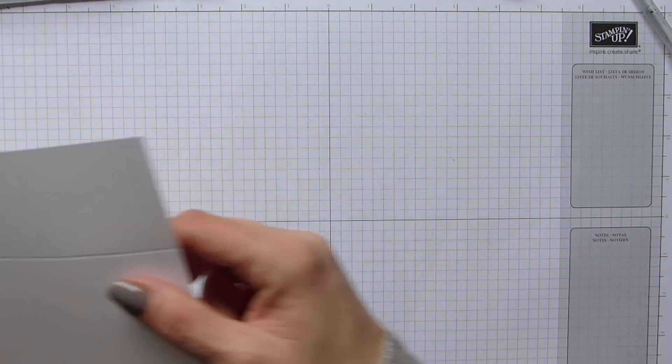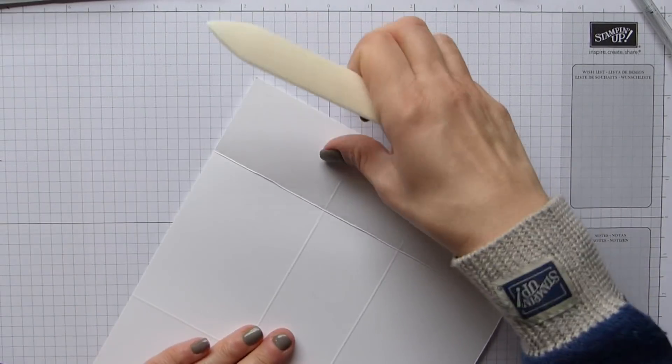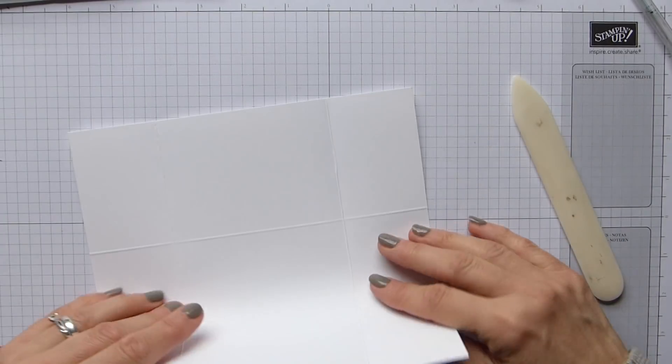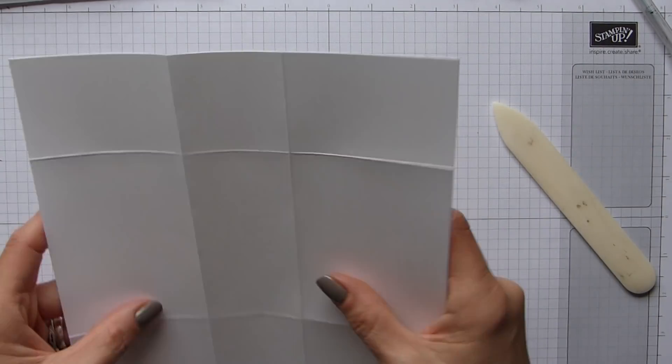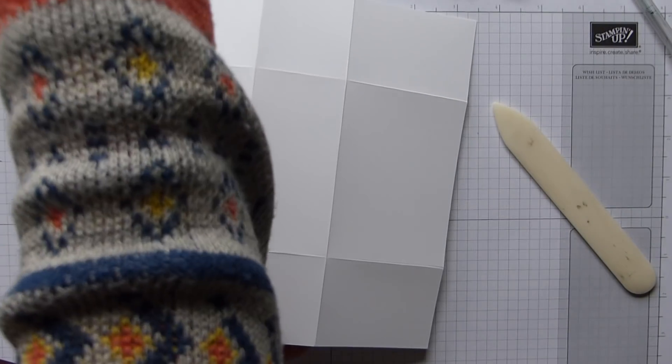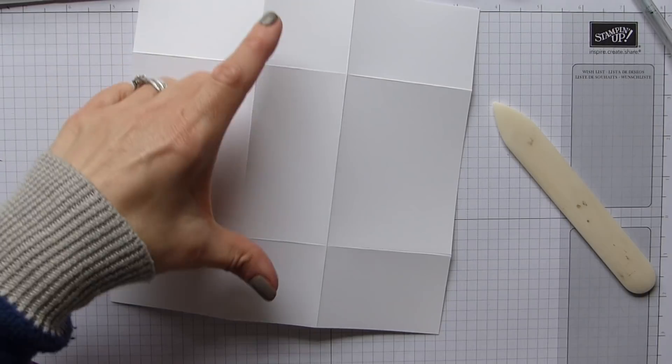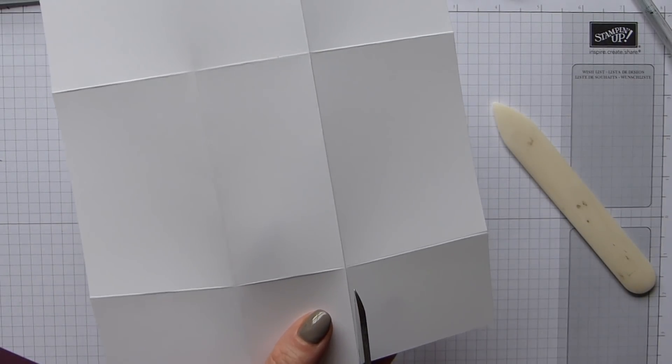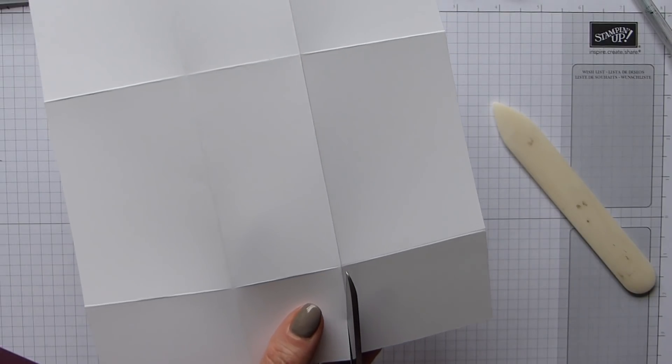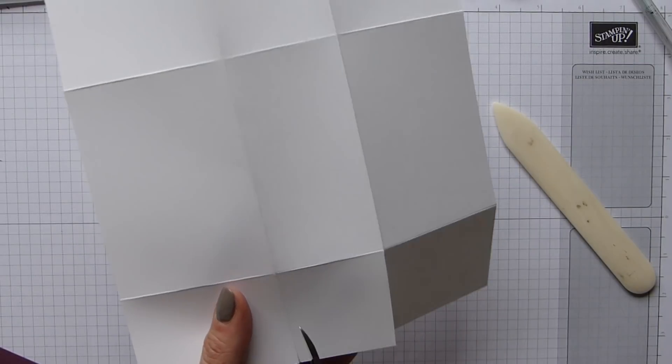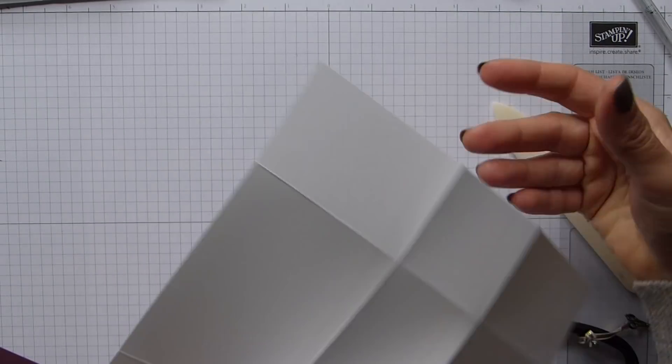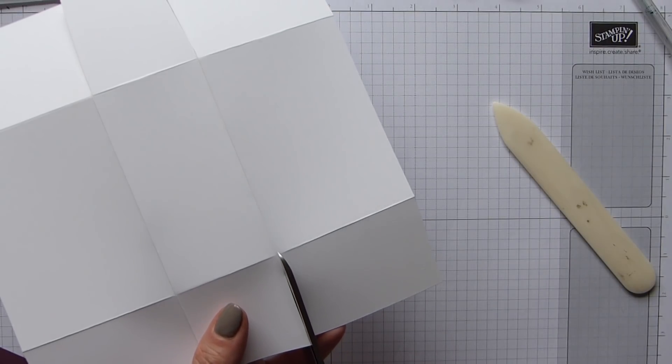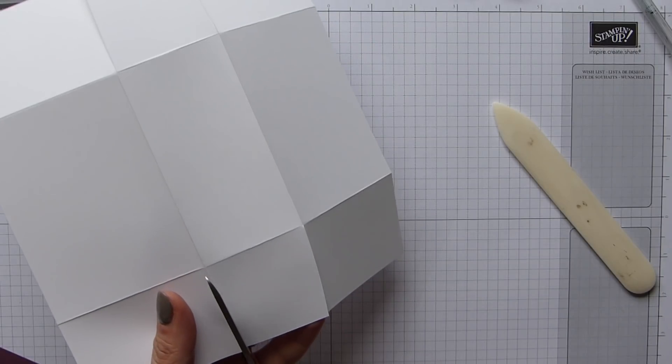I'm going to move this out of the way for the time being because what I want to do is I'm going to fold and burnish my score lines on this one. You've got literally a grid going on here and then what you need to do is just cut these small squares in the center. So we're just going to cut down to that score line and then we're just going to cut a bit of a wedge out of it. Cut down, cut your wedge. Okay and then we're going to do exactly the same on the opposite side.